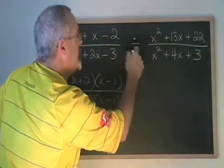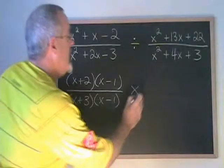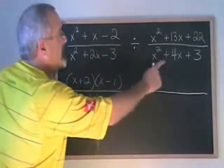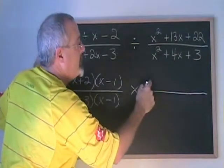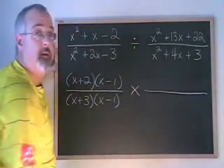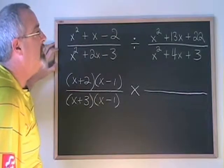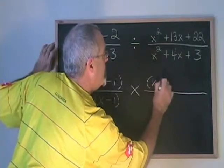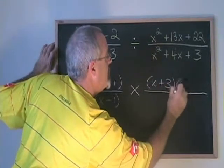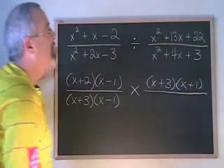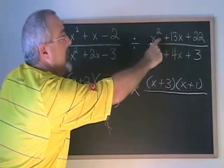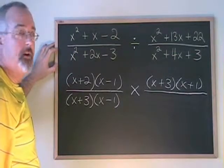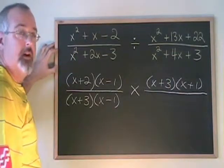I'm going to convert the division into a multiplication symbol, and I am going to write the second fraction upside down. So that means I'm going to factor this denominator and write its factors in the numerator here. What two numbers multiply to give 3 and add to give 4? They are positive 3 and positive 1. And now finally this numerator will go down here. What two numbers multiply to give 22 and add to give 13? They are positive 11 and positive 2.